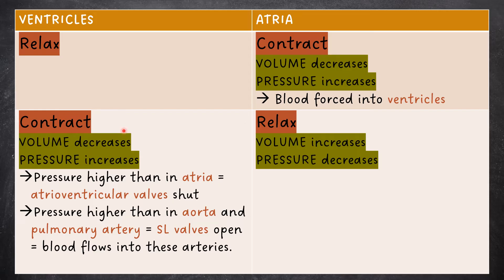Next, the ventricles contract and the atria relax. The volume of the ventricles decreases and the pressure in the ventricles increases. Because the pressure in the ventricles is now higher than in the atria, the atrioventricular valves shut. Because the pressure in the ventricles is also higher than in the aorta and pulmonary arteries, the semilunar valves open, meaning that blood flows into these arteries.